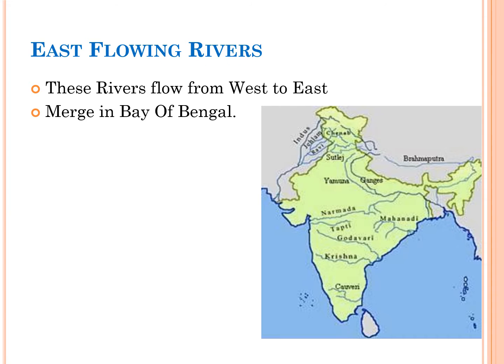The east flowing rivers are the rivers which flow from west to east and merge in the Bay of Bengal. Some of the east flowing rivers are Ganga, Brahmini, Mahanadi, Vamsadara, Nagavali, Godavari, Krishna, Penna, Kaveri and Vaige rivers.